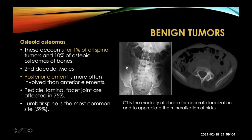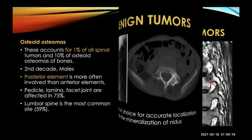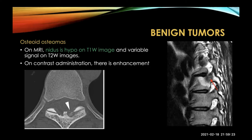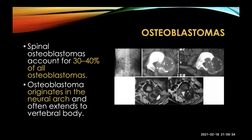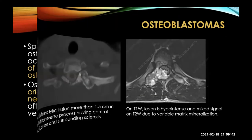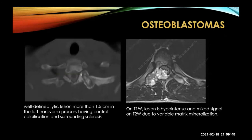Osteoid osteoma is commonly seen presenting with night pain, most often involving the posterior elements. You can see a nidus on imaging, and CT is a very good modality to detect it. On MRI, the nidus is hypointense on T1-weighted images and has variable signal on T2-weighted images; there is enhancement with contrast. Osteoblastoma accounts for about 30 to 40 percent of all osteoblastomas in the spine; they originate from the neural arch and often extend to the vertebral body. On CT you can see a well-lytic lesion in the posterior elements and transverse process with surrounding sclerosis; on MRI the lesion is hypointense with mixed T2 signal and variable matrix mineralization.